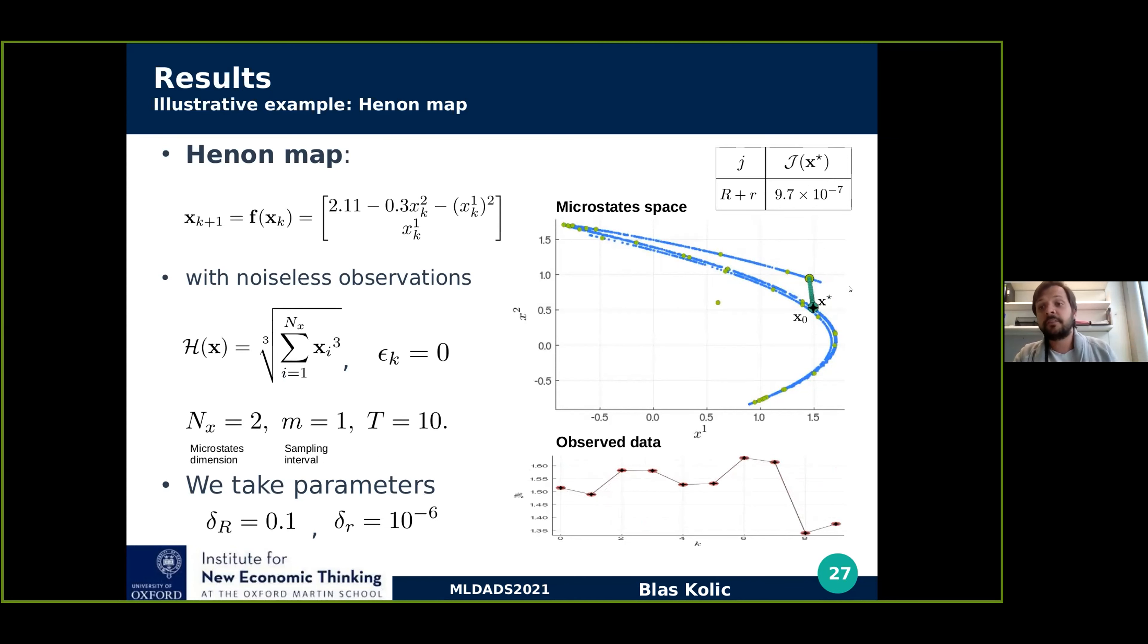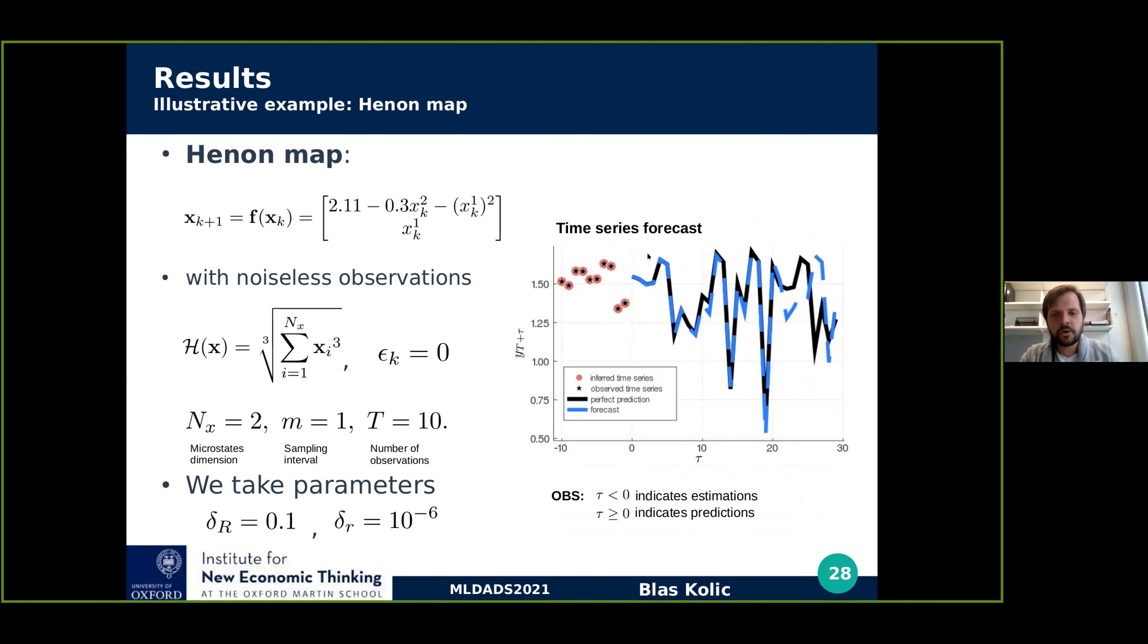And now we refine using Adam gradient descent until we actually match the observed data. And we call X star the initialized microstates. Remember that this X is latent. We cannot be sure that we are in the right place. It's just our only validation is with the observed data. But once we have X star, we can make predictions. For values of tau smaller than 0, we are in the assimilation window where we are fitting the function basically, and tau greater or equal to 0 are out of sample predictions. We can see that we can fit actually the values very well. And then when we forecast into the future, we also make very nice predictions up to a certain point when, by the chaotic nature of the system, it just diverges.